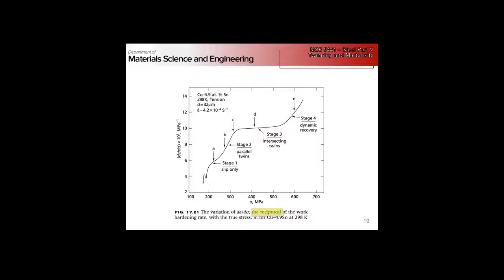In FCC, the {111} plane is both the twinning plane and the slip plane, so when the first twin starts to grow parallel to the slip direction, it doesn't have much effect — not a lot of dislocations interacting with the twins. But once the system hardens enough and twins start growing on other planes, they intersect and you get Hall-Petch-like effects from smaller grains and pileups, plus more dislocation interactions, giving very high hardening rates.